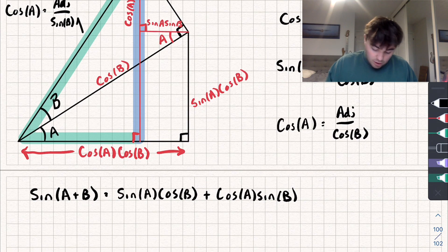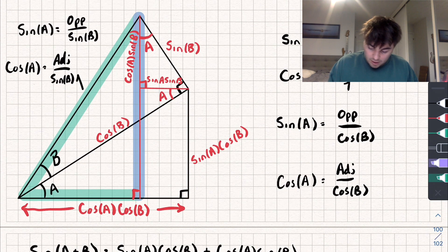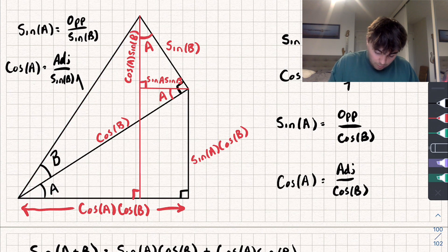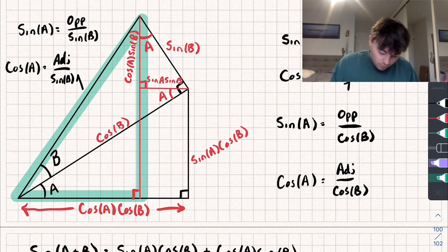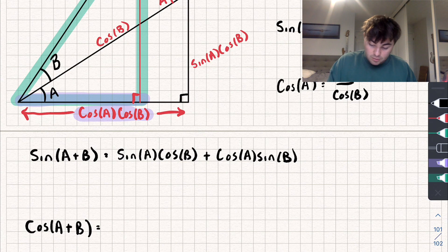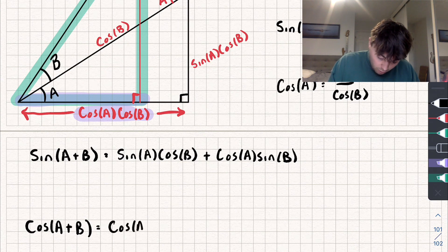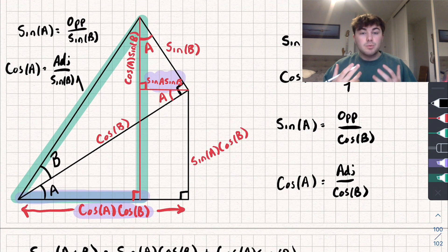Now let's do something similar but with cosine of A plus B. Cosine of A plus B is equal to the adjacent side, which is cosine of A cosine of B subtract sine of A sine of B, and that is again divided by the hypotenuse, which is equal to 1. So we have two of our angle addition formulae.